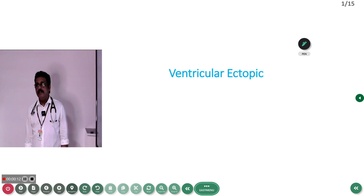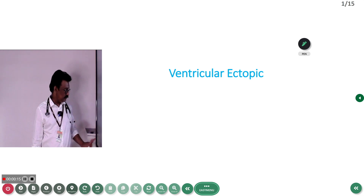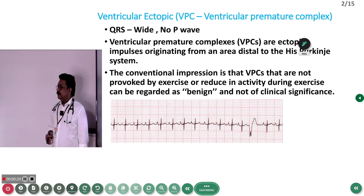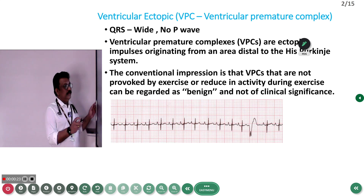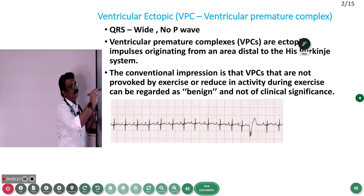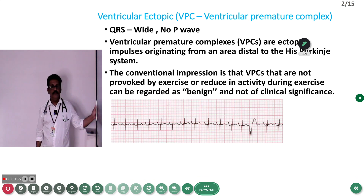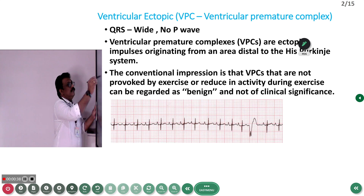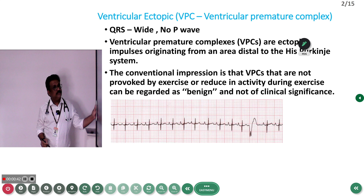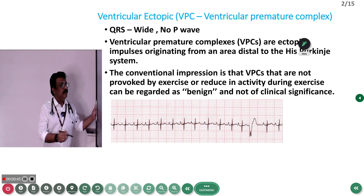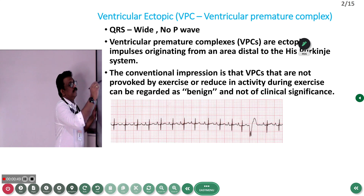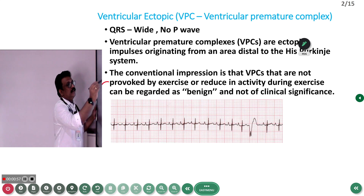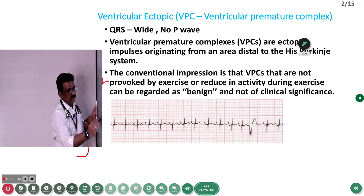Today let us discuss ventricular premature complexes or ventricular ectopics. Ventricular ectopic means it is not originated from the SA node. Normally, electrical activity starts from the SA node, goes to the AV node, then to the Bundle of His, then to the ventricles. That is the normal pathway. When this atrial part of the conduction system is not working, a ventricular activation occurs — there is no P-wave but there is a QRS complex.